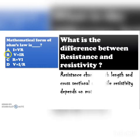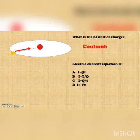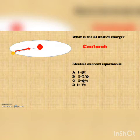What is the difference between resistance and resistivity? Resistance changes with length and cross-sectional area, whereas resistivity depends on the material. The SI unit of charge is coulomb.